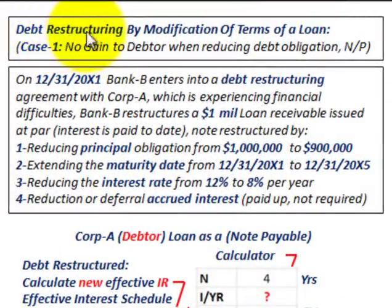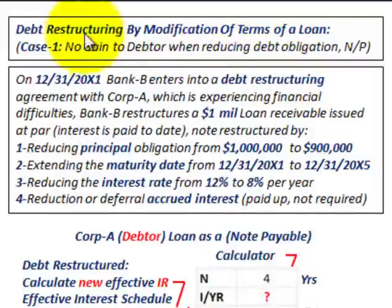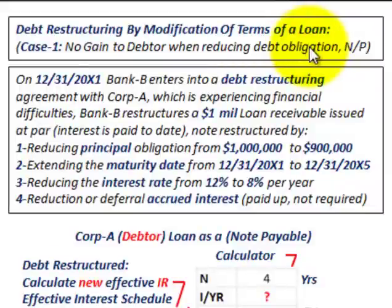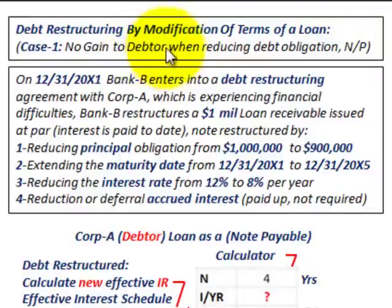We're going to be looking at debt restructuring by the modification of terms of a loan. We'll be looking at a case where there's no gain to the debtor when reducing the debt obligation, and it's going to be for a notes payable that the debtor has to pay.